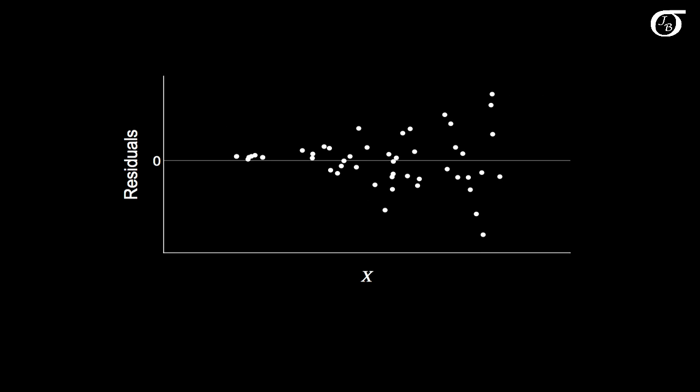In this residual plot there's a more obvious problem. The variance of the residuals is increasing with x. And that's a violation of the constant variance assumption. This type of situation is not uncommon. It's not unusual in statistics for the variance to increase with the mean.